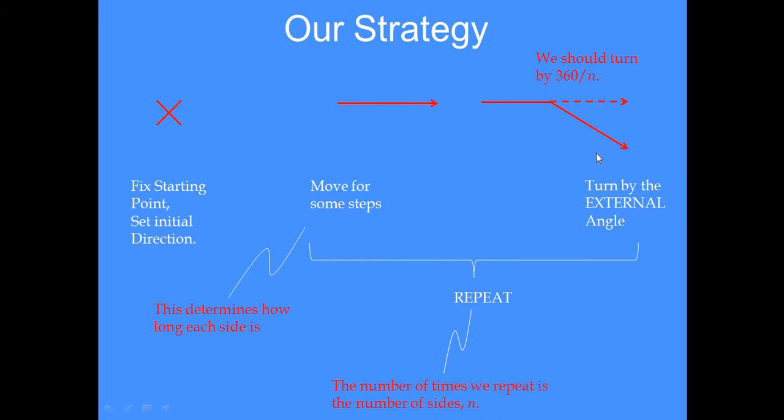Now the external angle, remember, is basically just 360 divided by n and thereafter we will repeat this set of steps some number of times. In fact, the number of times we will repeat this is the number of sides that I want.